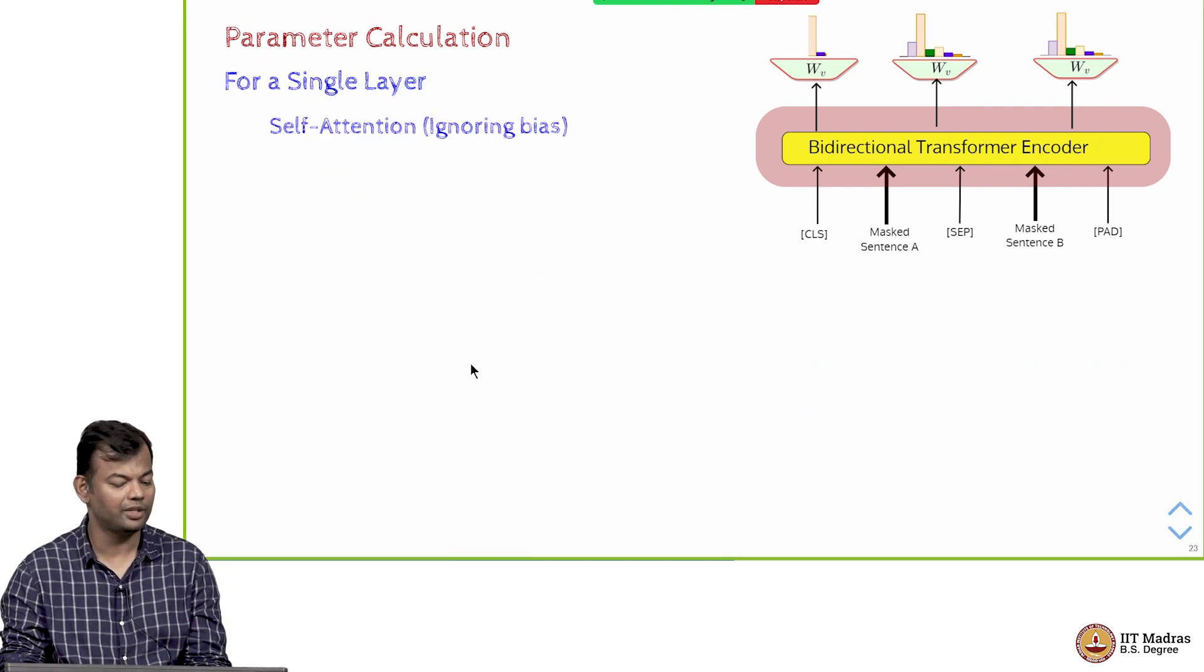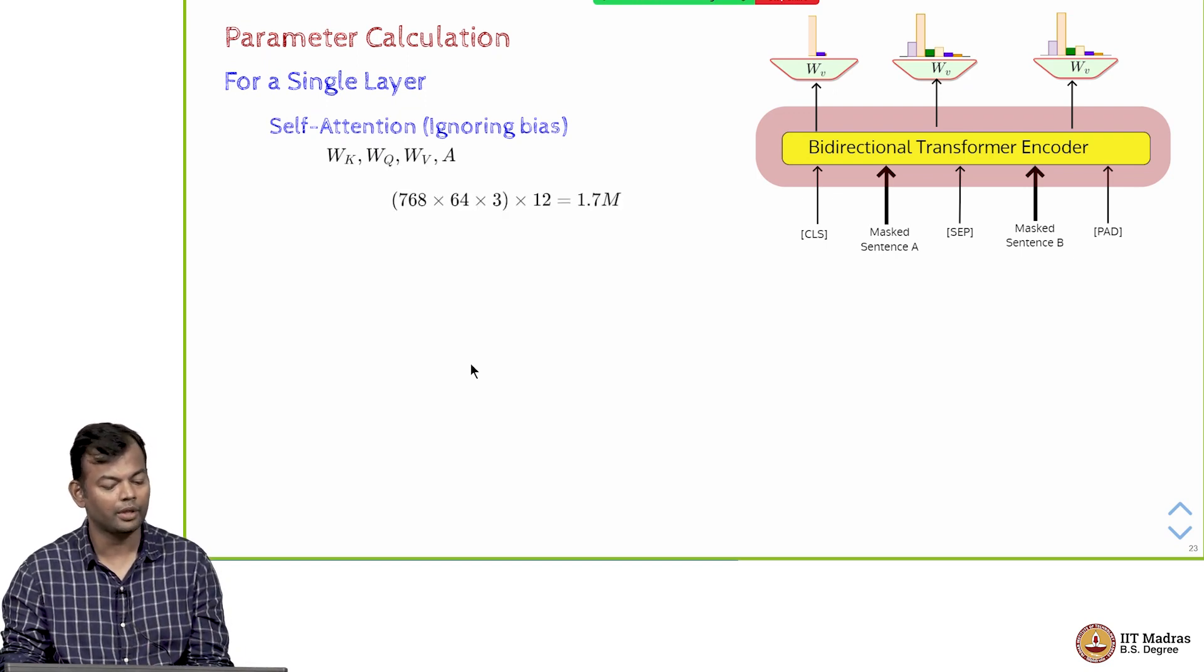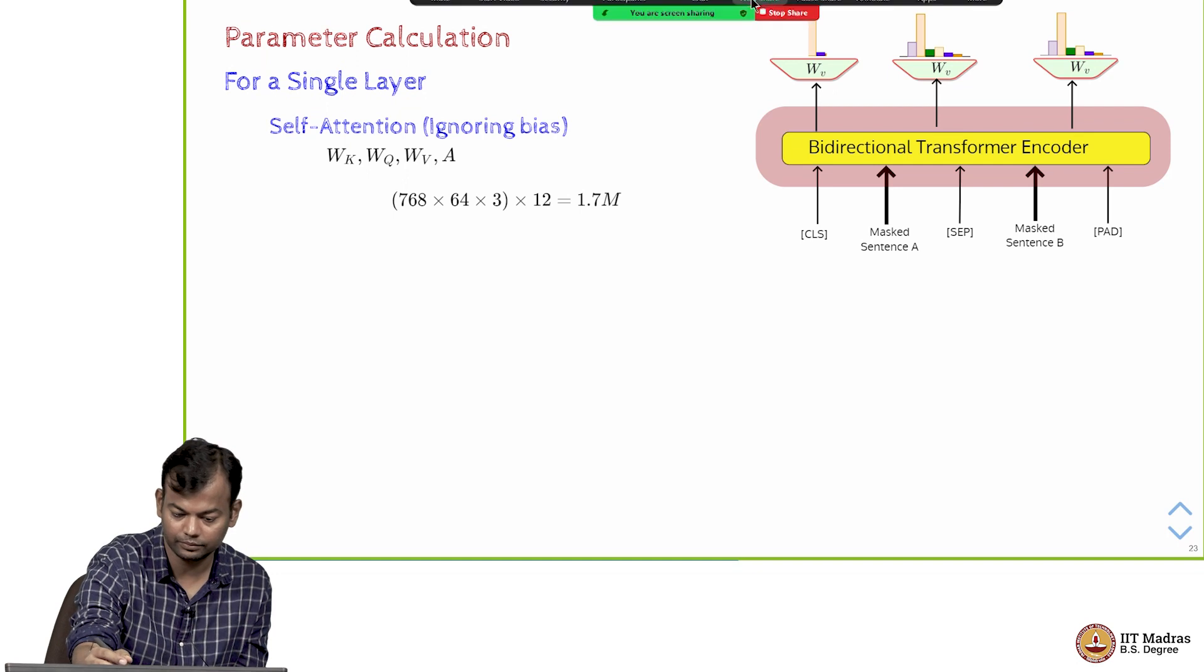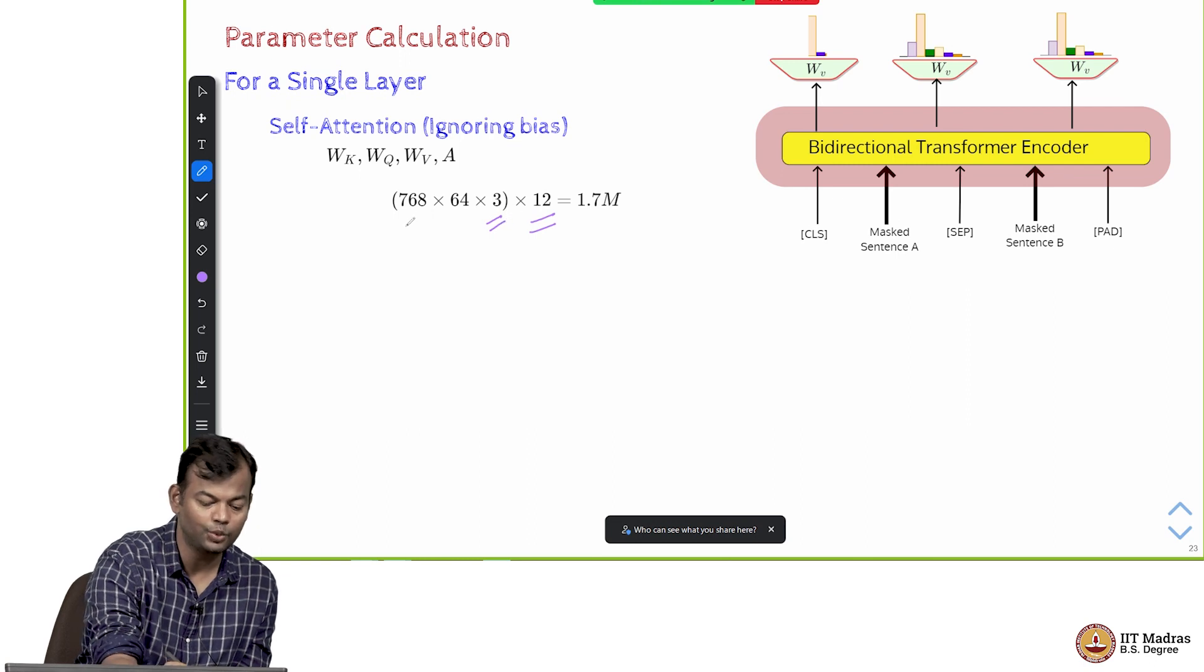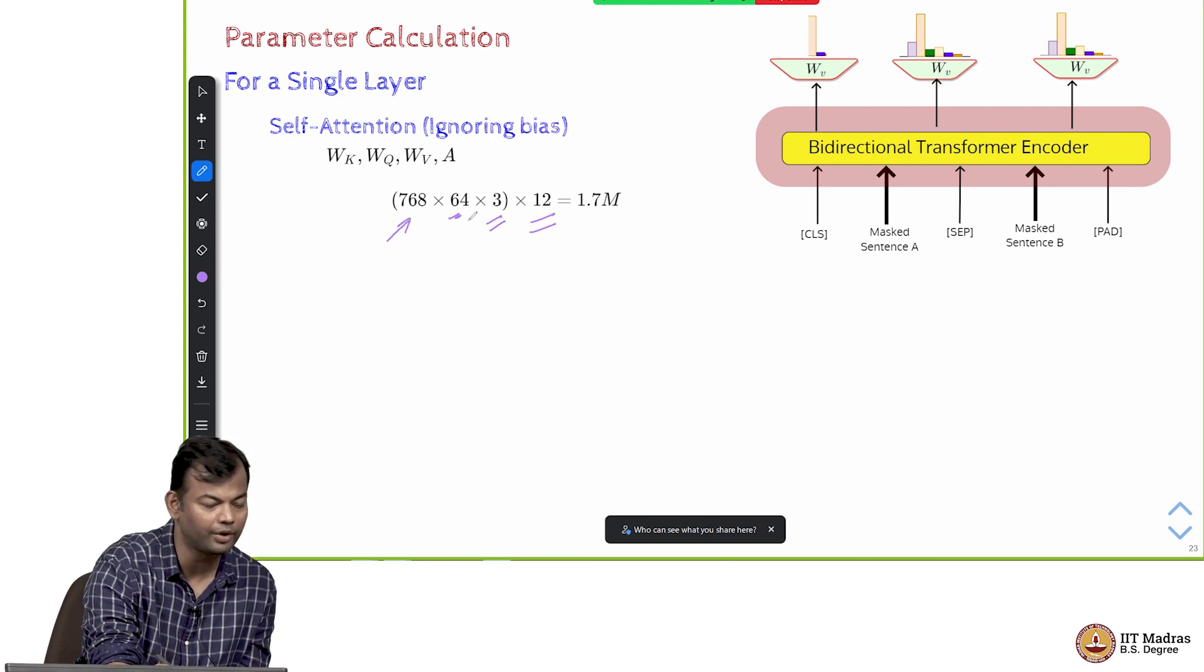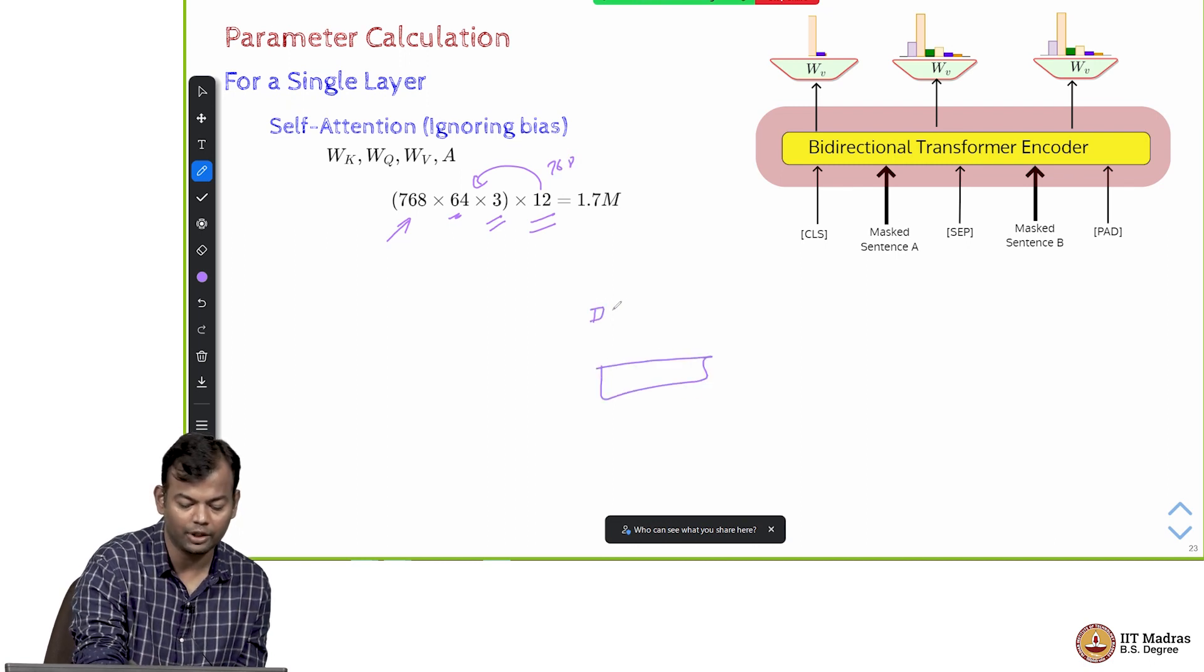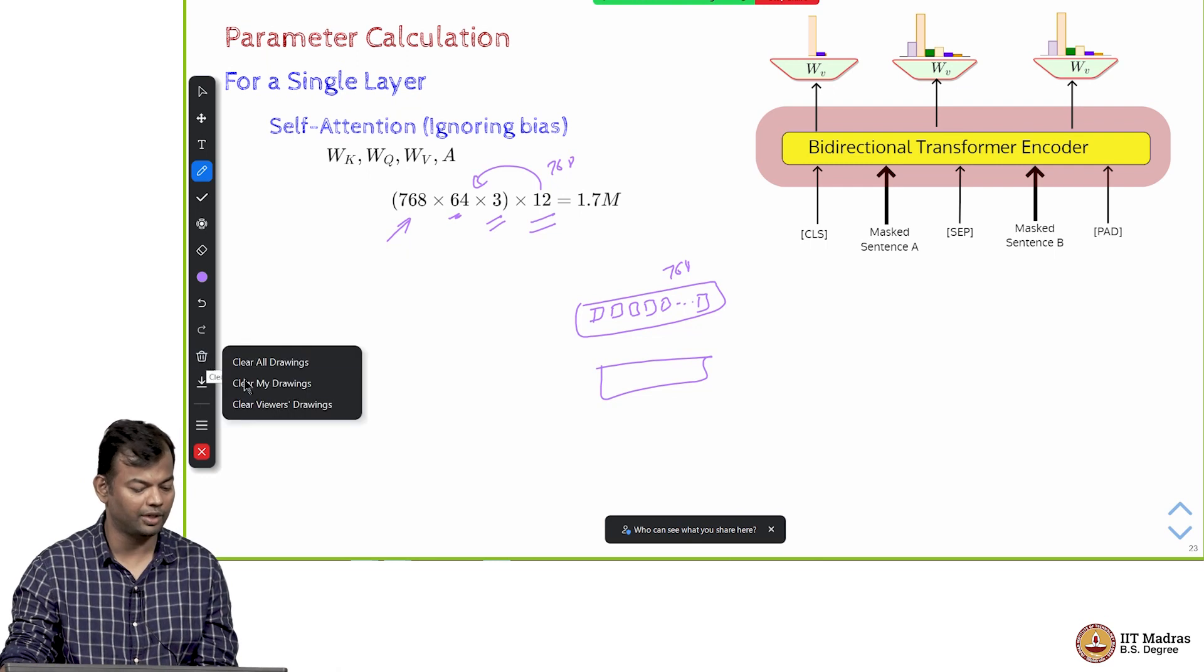Then for one layer, the self-attention, again ignoring the bias, you have these three matrices w_k, w_q, w_v. There were 12 attention heads, 3 matrices, each one takes the input representation and converts it to a 64 dimensional embedding, and then when you multiply the 64 dimensional embedding by 12, you again get back 768. You have the input 768 dimensional embeddings; the 12 attention heads generate 12 64-dimensional embeddings, then you concatenate them to again get back 768 dimensional. This is the basic transformer operation that you are familiar with.